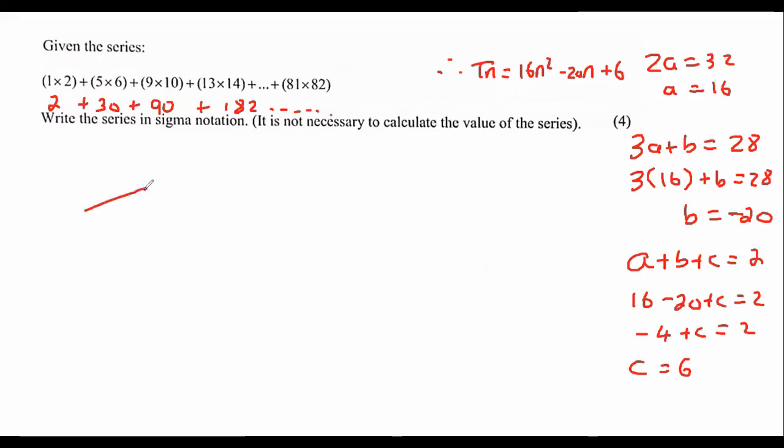So now we do the sigma notation. We put a k equals to 1. Type in your tn here. You can't use n because this number at the top is usually n. So you've got to be careful. I forgot to mention that. We're actually going to use this letter here that we chose. So it could be 16k squared minus 20k plus 6.